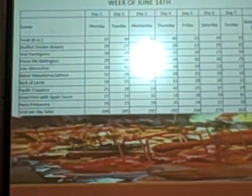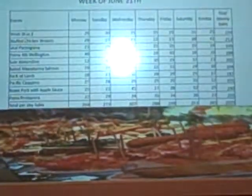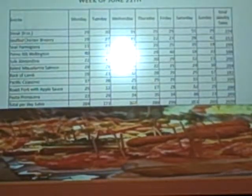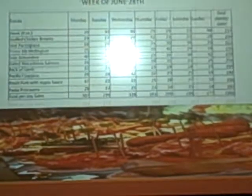We did the same thing for the next week, June 14. We used basic formulas in Excel. And in the summary, we can see that chicken was the most popular item in the hotel overall.